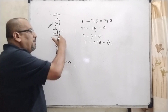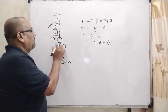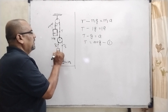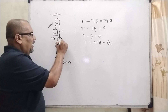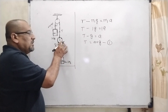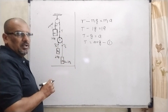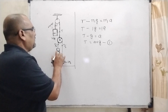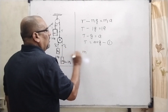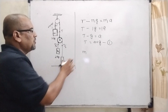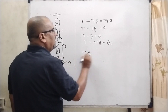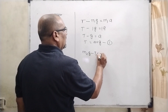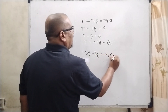Now consider the subsystem. Due to T/2, M2 goes up and M3 goes down, but the whole system is falling down. So we consider this as the subsystem. Overall the whole system is falling down. Therefore, M2*G minus T/2 equals M2*(A minus A dash). Here, consider this acceleration is A dash.